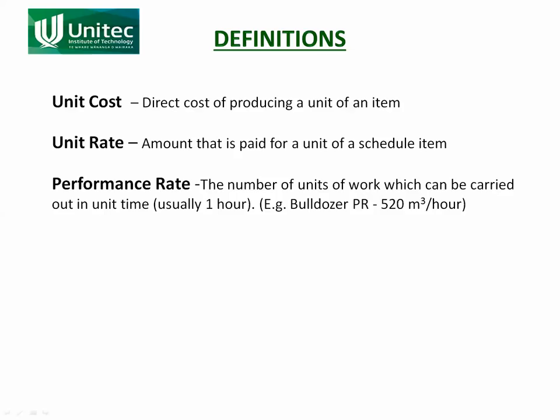The other half of that is how fast you can actually do that unit of work — that is what the performance rate is. It's the number of units of work that can be carried out in a unit of time, usually an hour. For example, a bulldozer's performance rate would be something like 520 cubic meters per hour, meaning every hour that bulldozer is operating it will shift 520 cubic meters of soil. The unit measure is cubic meters and the unit time is one hour.